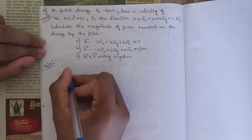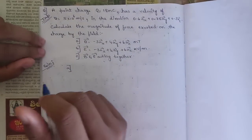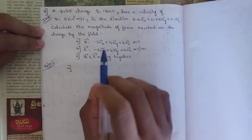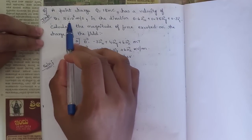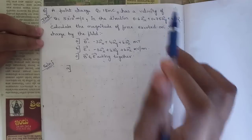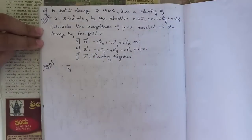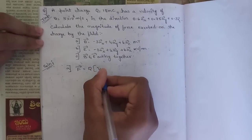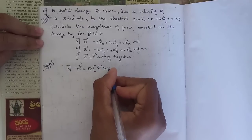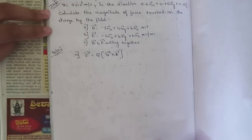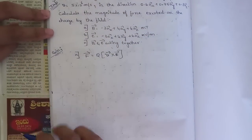For sub-question 1, the given data includes the charge, velocity, direction, and magnetic field. The relevant formula is F = q(v × B), which we have seen in the force on a moving charge topic. Using this relation we are going to solve the first sub-question.